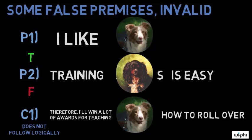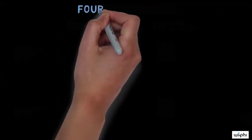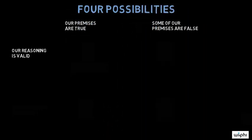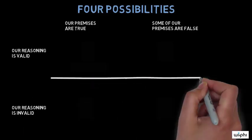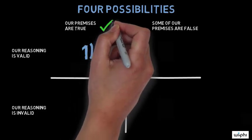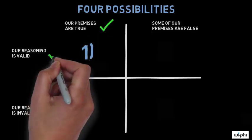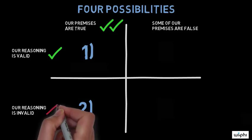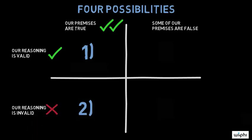You have probably already noticed that truth and falsity, as well as validity and invalidity, can appear in various combinations in an argument, giving rise to four possibilities. Let's take a moment to review them together. Possibility one: we may have our facts right — our premises are true — and we may use them properly, so our reasoning is valid.